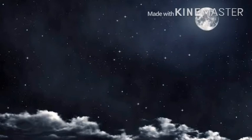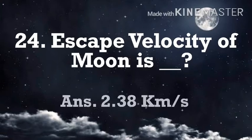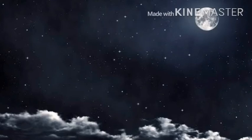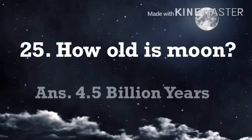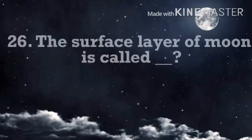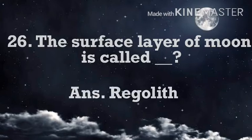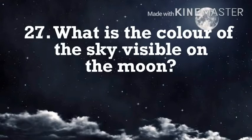What is the escape velocity of the moon? 2.38 kilometers per second. How old is the moon? 4.5 billion years. The surface layer of the moon is called regolith. What is the color of the sky visible on the moon? Black.